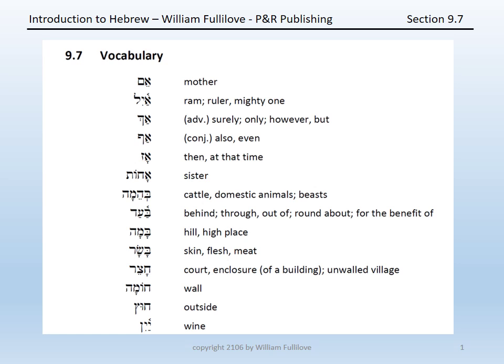Finally, we come to the vocabulary for chapter 9. The vocabularies are as follows: aim, meaning mother; aisle, a ram — but therefore can metaphorically become a ruler or mighty one.